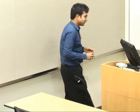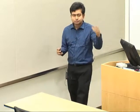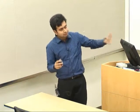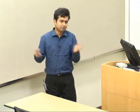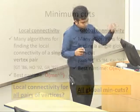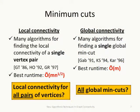For global connectivity, imagine you want to increase network robustness. Finding one min-cut is not sufficient — if you add edges to that cut, other min-cuts could still reduce the effectiveness. So we are interested in finding all global min-cuts in a network, and how fast we can do that.